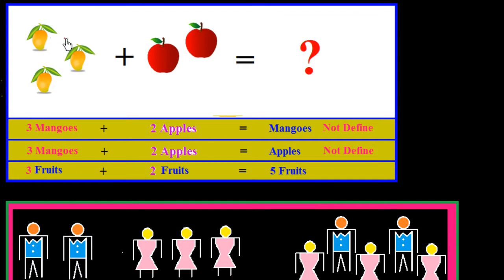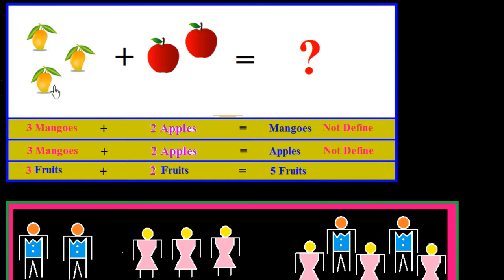Now I would like to explain one of the most important characteristics of addition. Here you see there are three mangoes and two apples. If the units are not the same, if the quantities are not the same, we cannot add them up — they must be in like terms. So three mangoes and two apples cannot be added.